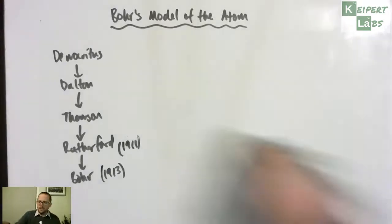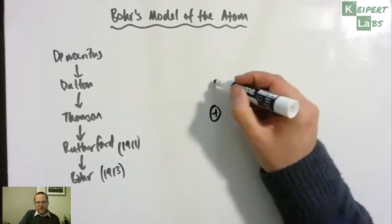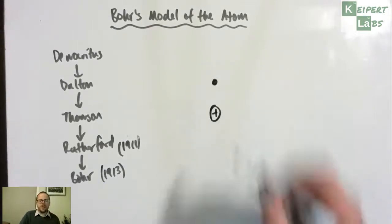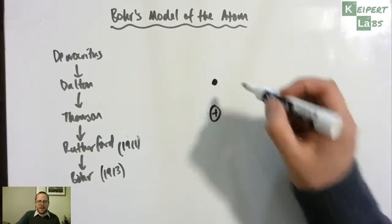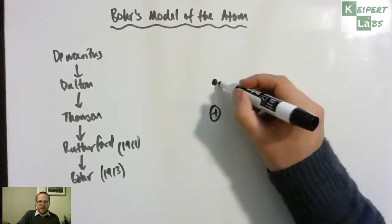If we take another look at Rutherford's model of the atom, more like a top-down view, thinking about the electron and its orbiting around the outside.